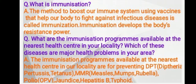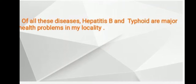The immunization programs available at the nearest health center in our locality are for preventing DPT — diphtheria, pertussis, and tetanus — as well as hepatitis B and typhoid. Of all these diseases, hepatitis B and typhoid are major health problems in my locality.